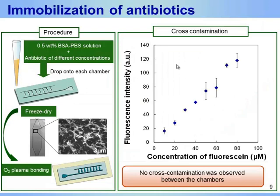For the next step, gentamicin of different concentrations was immobilized in the form of freeze-dried matrices in each chamber. The procedure for immobilization was shown on the left. An antibiotic solution containing 0.58% bovine serum albumin was dropped onto each chamber before bonding PDMS and glass substrate and freeze-dried. The freeze-dried matrices were very porous and dissolved in solution within a second. To confirm that the components of each chamber did not mix during the seeding steps, freeze-dried matrices with fluorescence of a series of concentrations were immobilized in each chamber, and we measured the fluorescence intensity in each chamber. A linear relationship was observed between fluorescence intensity and concentrations, confirming no cross-contamination in each chamber.